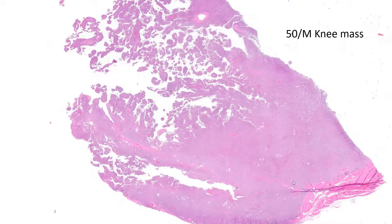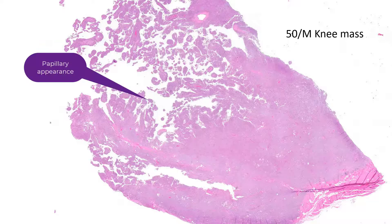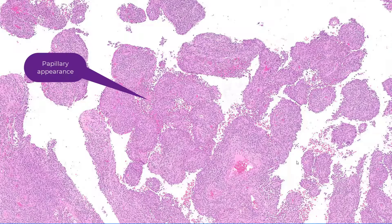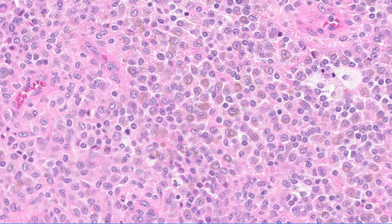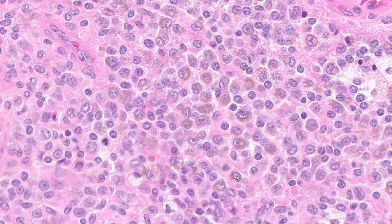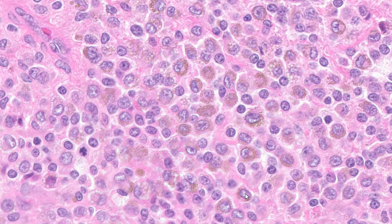Back to our case — remember, this was a 50-year-old with a knee mass. At very low power you'll see this very florid papillary configuration. The papillary configuration and mononuclear cells are what you're looking for to make a diagnosis of tenosynovial giant cell tumor — the diagnostic mononuclear cells.